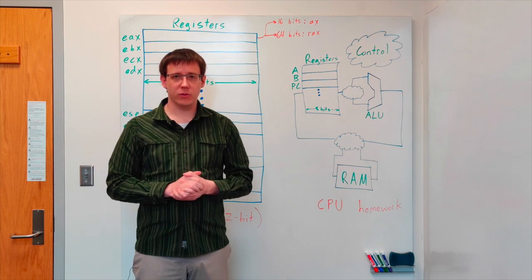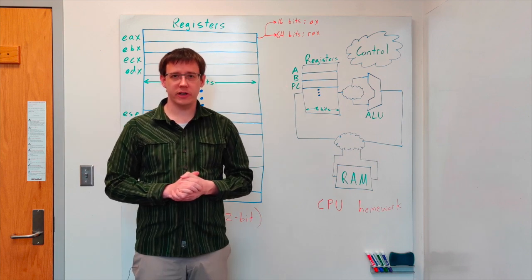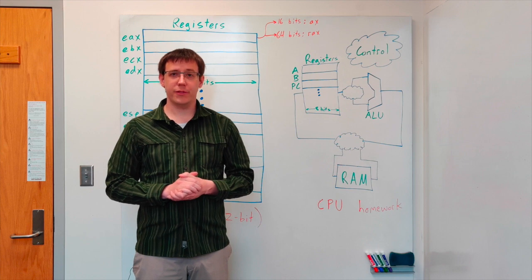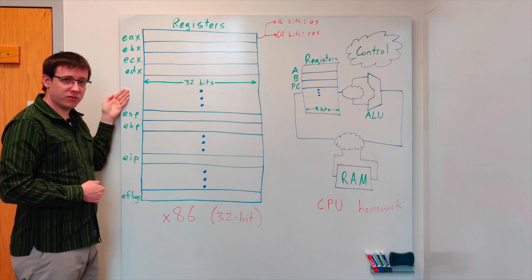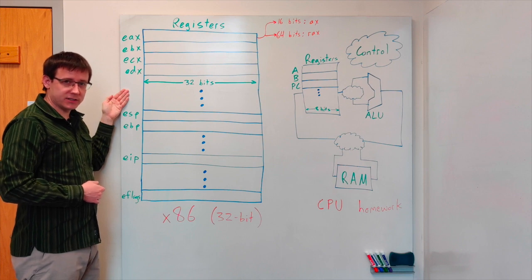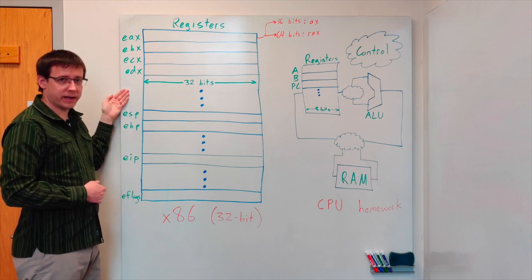When we start working in assembly language we're going to use the IA32 instruction set and so we'll be working with 32-bit registers instead of 8. Here we have a diagram of some of the important 32-bit registers that we'll be using when we work in IA32 assembly.